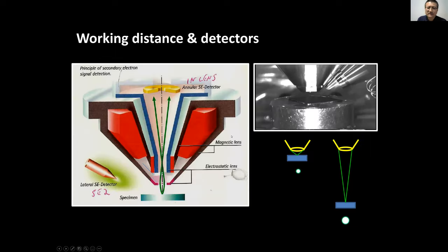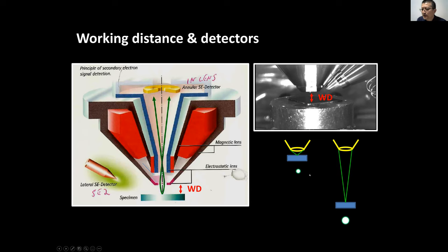What is working distance? It's the distance between your sample and the final lens in the SEM column. When you change the sample height — closer or farther away — the beam cross-section changes. When your sample is very far, even if you focus the beam onto it, the beam size is actually bigger. That's why the first thing you want to do when loading a sample is move it up close to get a good image.